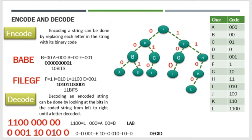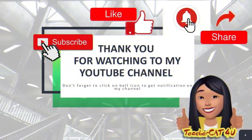Meron pa tayong isa pang example: 0-0-0-1-1-0-0-1-0-0-1-0-0. I-de-decode mo yan — kunin mo muna yung equivalent na character. Yung 0 ay letter D. Yung 0-0-1 ay letter E. Yung 1-0 ay letter G. Yung 0-1-0 ay letter I. At yung 0 ay letter D. Kaya nabuo natin yung word na 'DEGID'. Yan yung paraan kung paano mag-encode at mag-decode ng messages gamit ang isang tree. Thank you for watching — don't forget to subscribe and click the bell icon to get notifications on my channel. Salamat po.